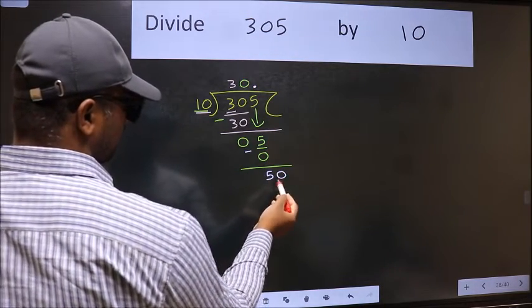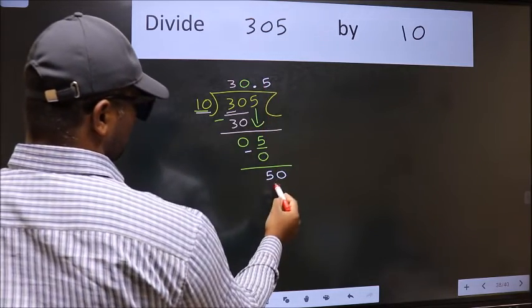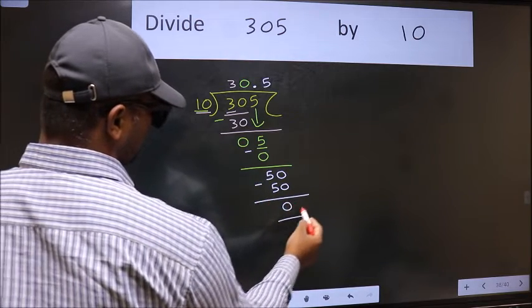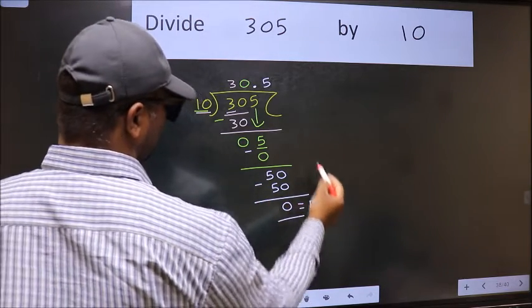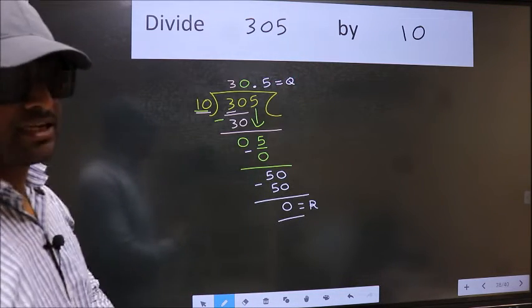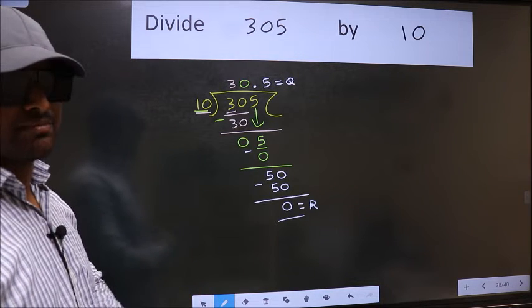So now we can put dot and take 0, so 50. When do we get 50 in 10 table? 10 times 5 is 50. Now we should subtract. We get 0. This is our remainder, and this is our quotient. Did you understand where the mistake happens? You should not do that mistake.